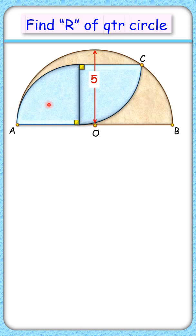Can you find the radius of this quarter circle? We are given two quarter circles inside the semicircle with radius 5 cm. Let's check the solution.